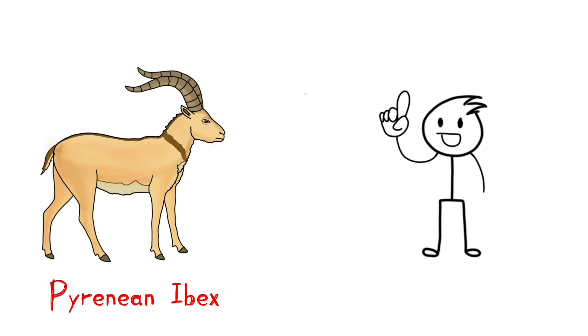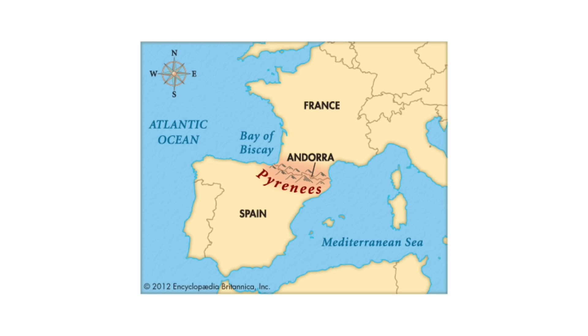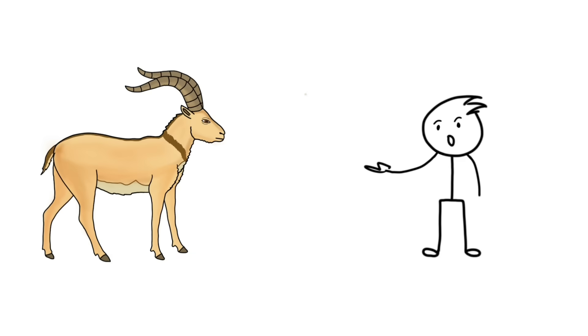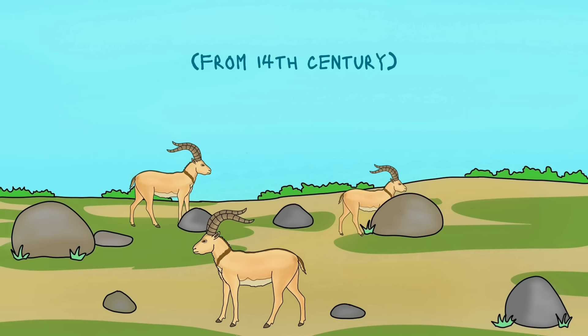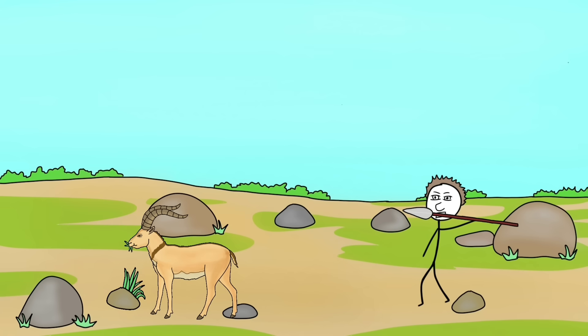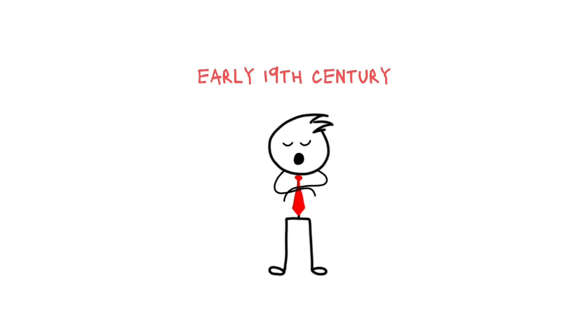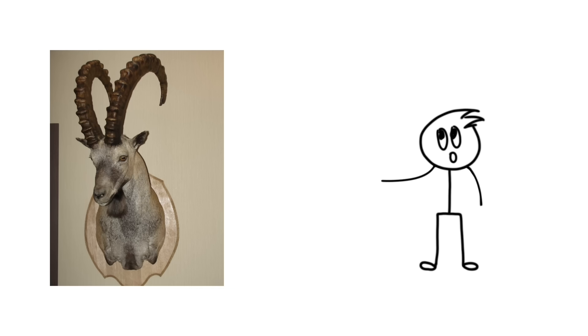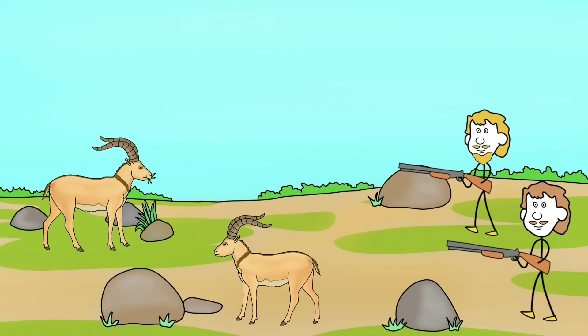This mountain goat was called Pyrenean ibex. They were found in the Pyrenean mountains between France and Spain. These goats had beautiful curved horns, and those horns became the curse for these species. Their population was already decreasing from the 14th century, but the hunting at that time was done for food and skin. But from the early 19th century, the luxury of keeping the head as decoration for European nobles led to the massive hunting of ibex.